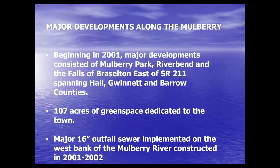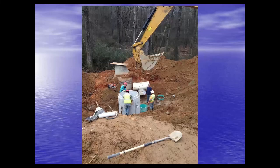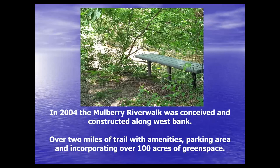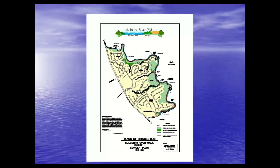We also have a major 16-inch outfall — major for us — on the west bank of the river that we constructed when those developments were started. In 2004 we took the land donated by developers and constructed the Mulberry River Walk along the west bank — it's two miles of trail, all naturalized trail, with amenities such as benches, a waterfall, picnic tables, a parking area, and a hundred acres of green space open to the public.